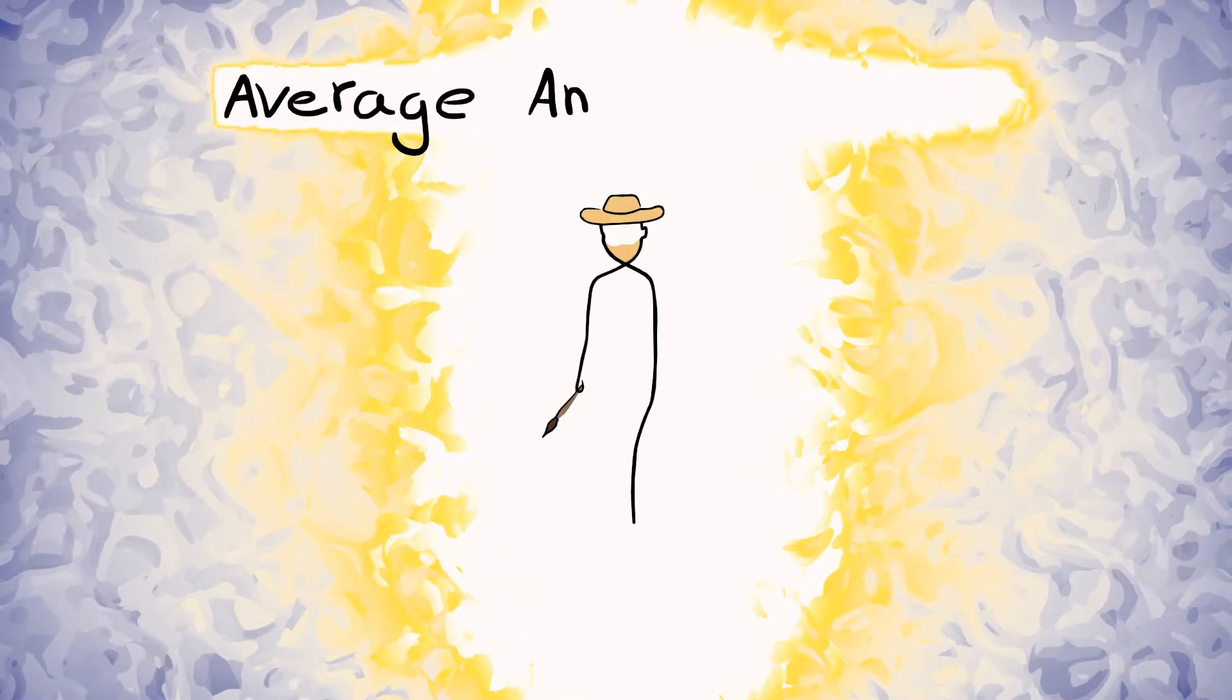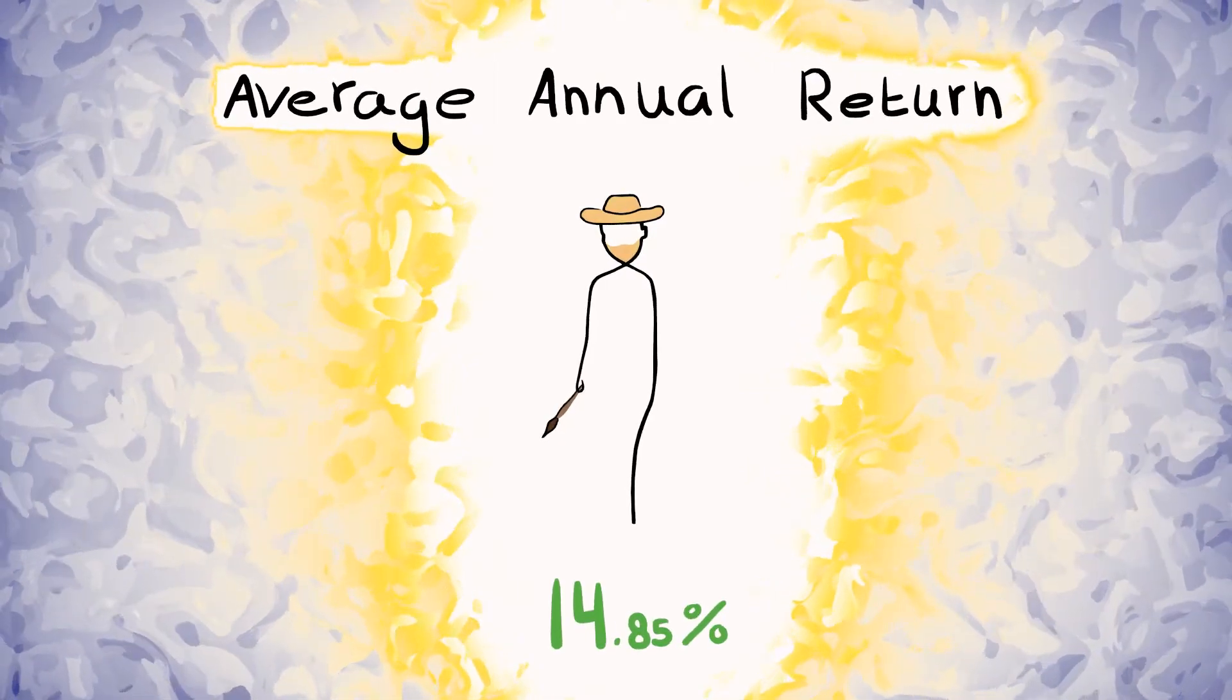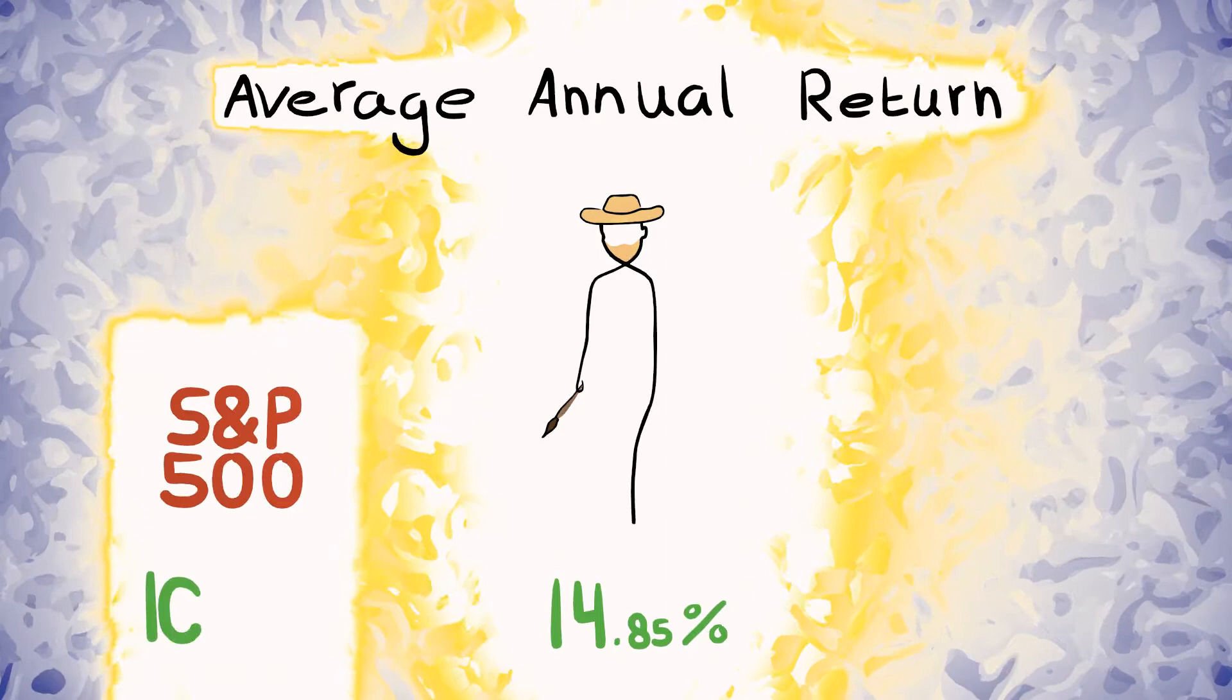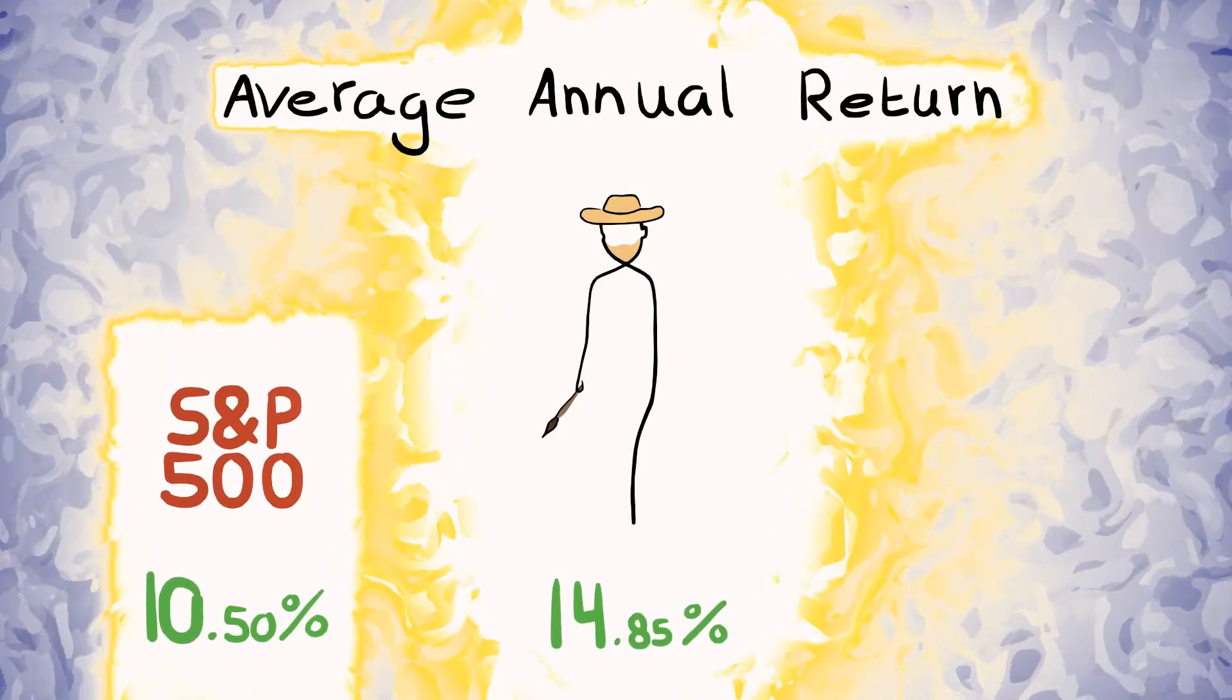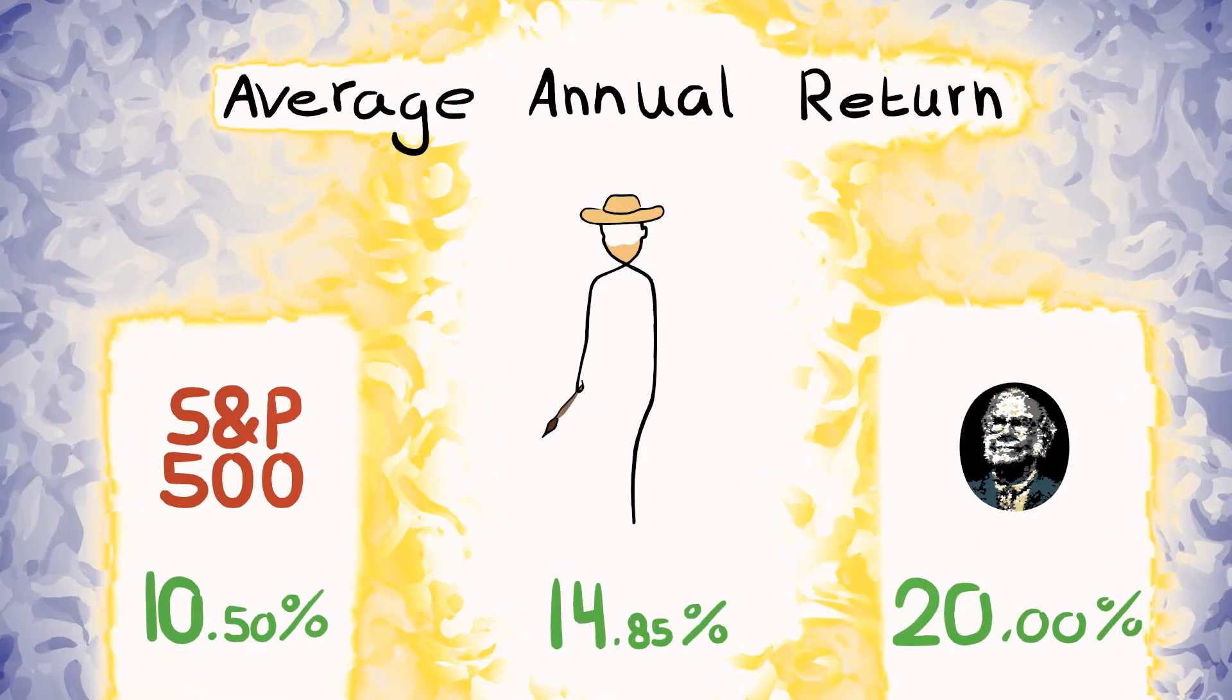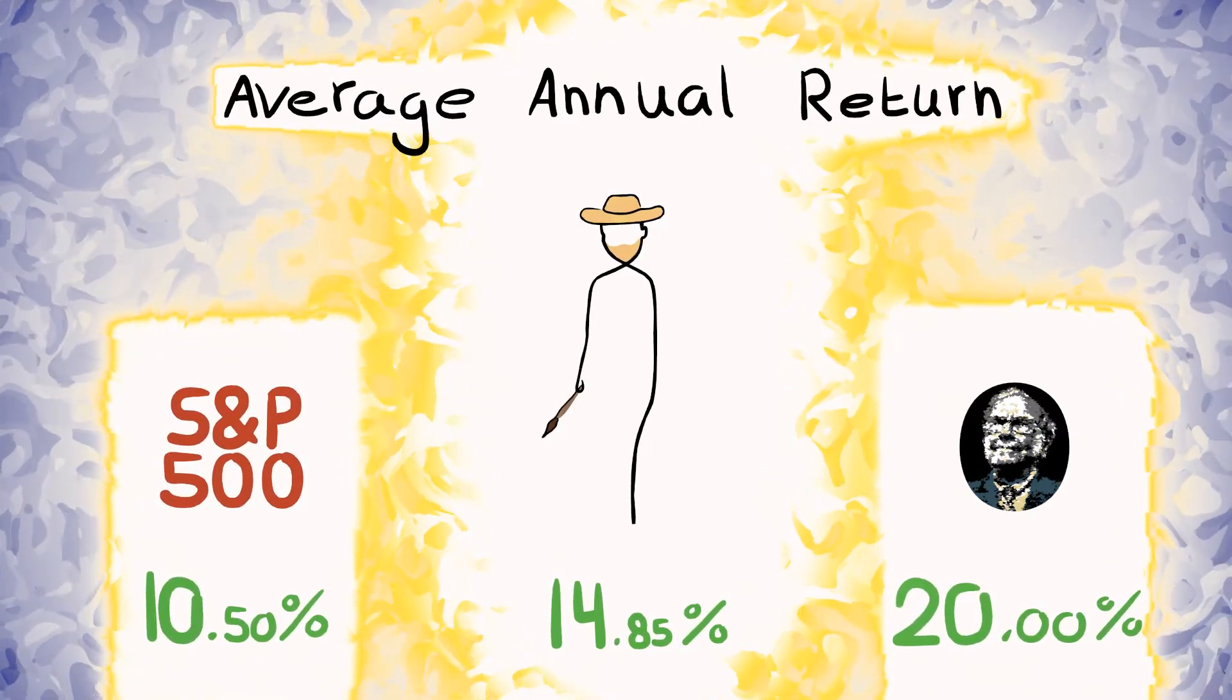That gives us an average annual return of 14.85%. And is that good? Well, that's better than the S&P 500 index fund, which has averaged about 10.5% over its lifetime. But it's worse than Warren Buffett, one of the greatest investors ever, which averaged about 20% with his holding company Berkshire Hathaway. So that 14% seems pretty good.